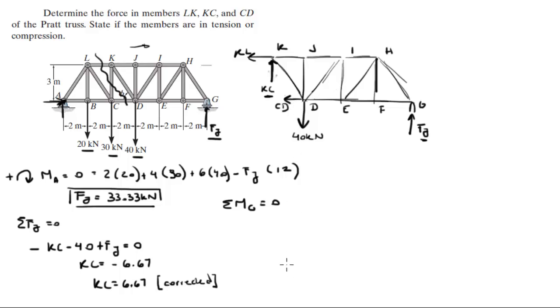So, sum of the moments at G, equal to 0, which are equal to 40 times 6, minus 6.67 times 8. Because it's going up, let's assume clockwise is positive. So, Kc is creating a negative moment, plus Kl times 3.